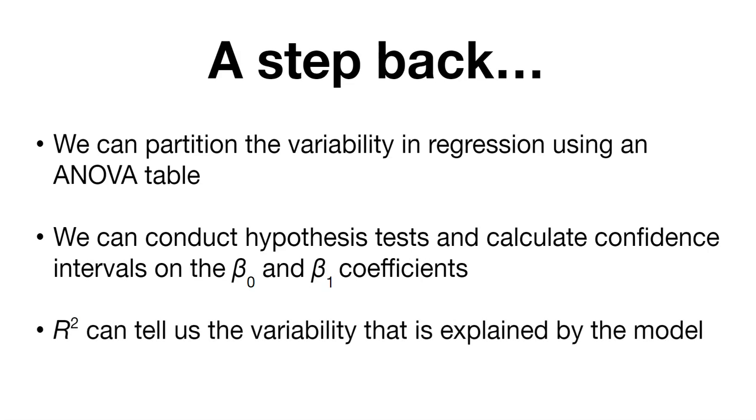We know that one number that can tell us the amount of variability that's explained by the model is R squared. An R squared value close to one indicates that the model explains a lot of the variability inherent in the data. An R squared closer to zero indicates there's no relationship between what you're measuring and what you're seeking to estimate.